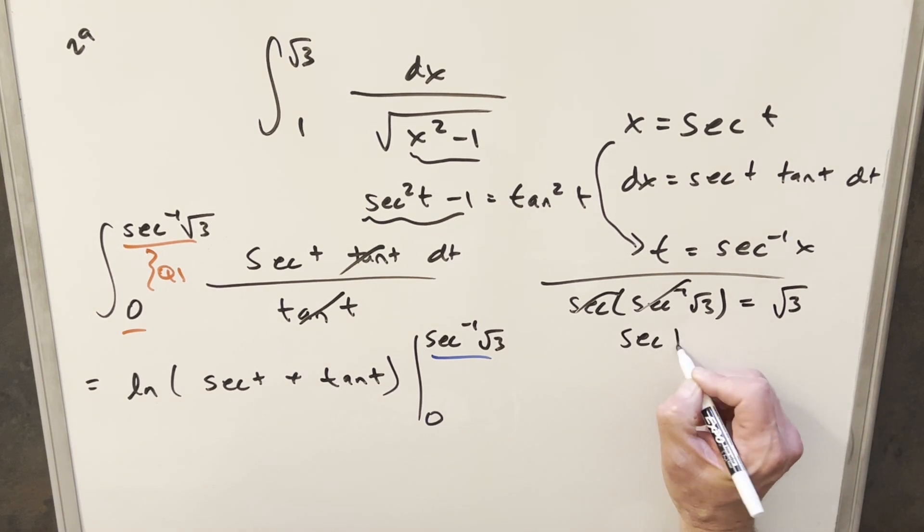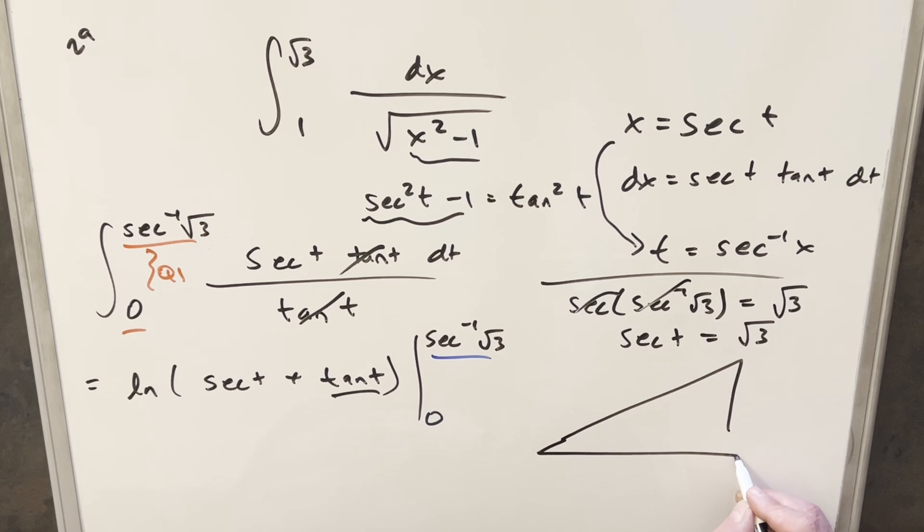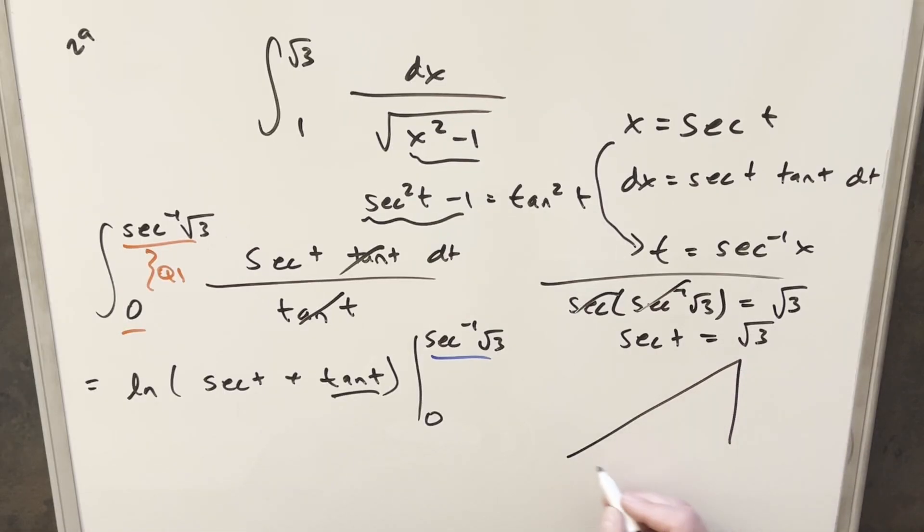So we're saying for our secant t value, this is square root of 3, and what we can do is use this to draw the triangle in order to find tangent of t. So drawing the triangle, trying to get it correct.